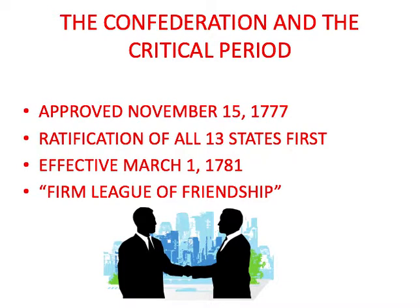The Articles of the Confederation were adopted and approved November 15, 1777, after declaring independence from England. Ratification was needed by all 13 states in order to go into effect, which was hard to do. Eventually it did go into effect four years later, in 1781.